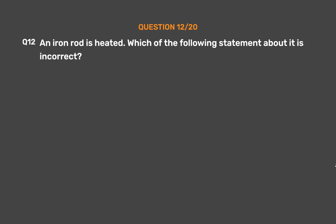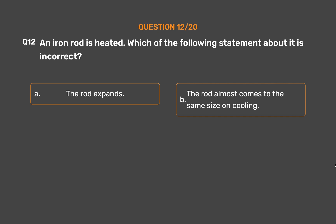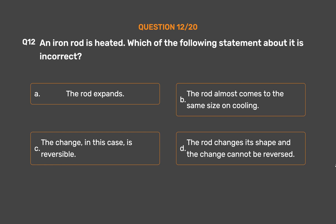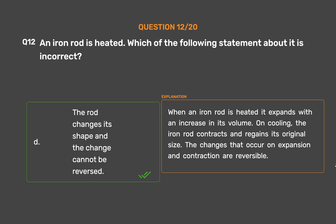Question number 12: An iron rod is heated. Which of the following statements about it is incorrect? Option A: The rod expands. Option B: The rod almost comes to the same size on cooling. Option C: The change in this case is reversible. Option D: The rod changes its shape and the change cannot be reversed. The correct answer is Option D. When an iron rod is heated it expands with an increase in its volume. On cooling, the iron rod contracts and regains its original size. The changes that occur on expansion and contraction are reversible.